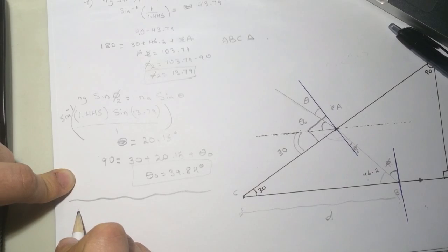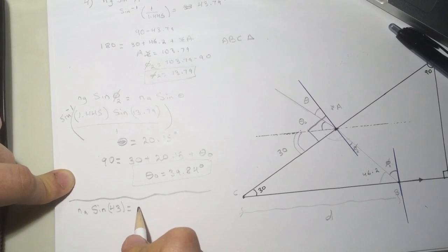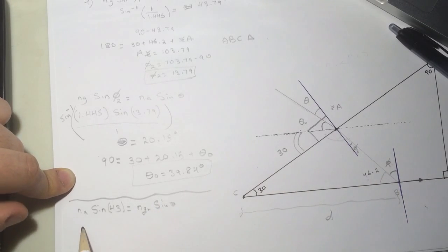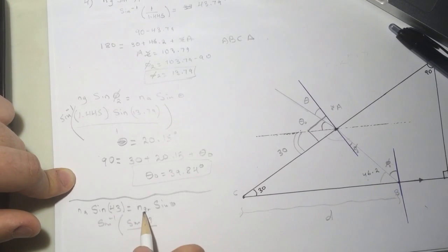So we'll do n air sine of 43 will be equal to n, we should put n_g for the red, times the sine of the angle we want to see. Let's crank this guy. We'll get sine inverse will be equal to sine of 43 divided by the one for the red, n_g_r.